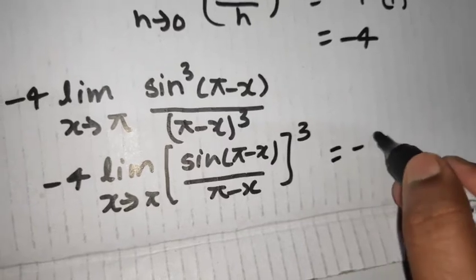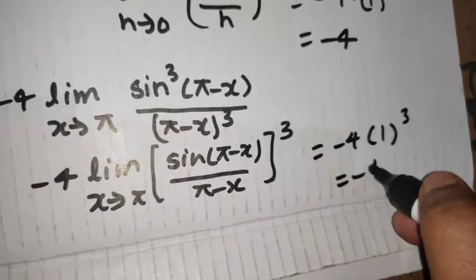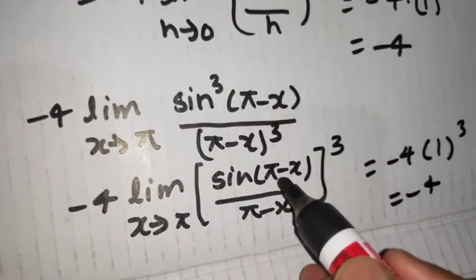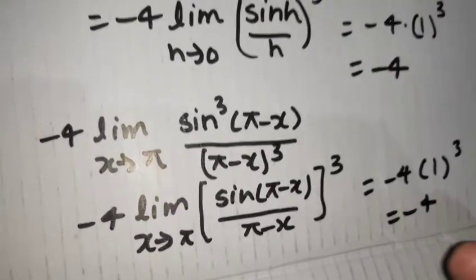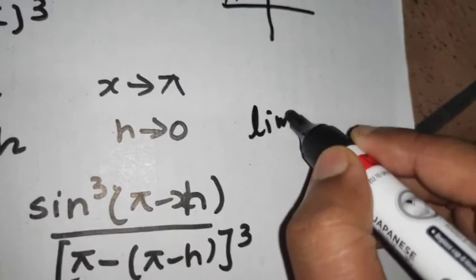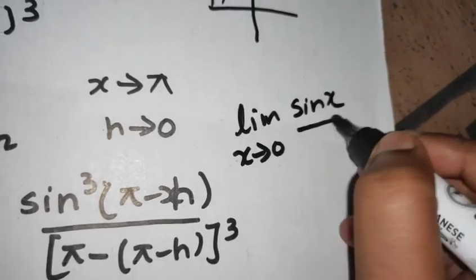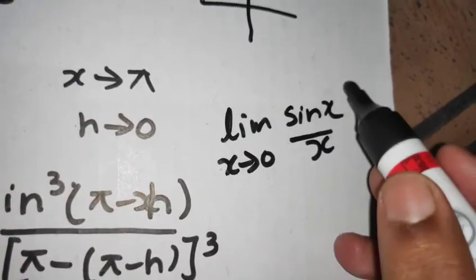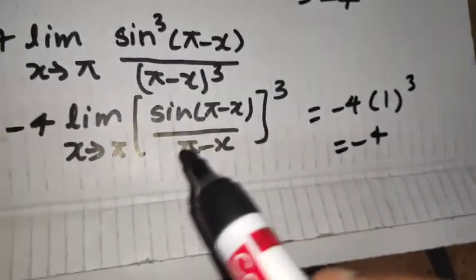So minus 4 times 1 cube equals to minus 4. So if you are having any problem look at if you put pi here so sin 0 by 0 is appearing. Look at here when you put 0 sin 0 by 0 same form is appearing here also and same thing is appearing here also.